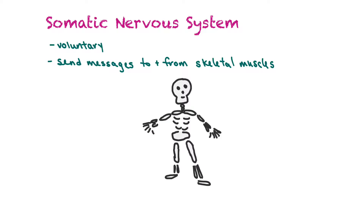Our somatic nervous system is a voluntary system and it sends messages to and from our skeletal muscles. Skeletal muscles are also known as striated muscles and they're under voluntary control — if I wanted to move my arm, I could voluntarily do it. We can also have reflex actions, but somatic nerves ultimately control voluntary muscles.